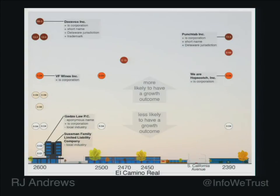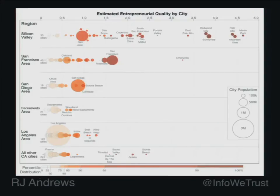We explained how the algorithm impacted real businesses on a real block in Palo Alto, saying some of these businesses have a really good chance of having a growth outcome and some don't. Once you're on board and understand that we're doing this calculation at the business registration level, we can roll these businesses up into individual cities in California. Here we have high-quality entrepreneurial cities all the way on the right and low ones on the left, separated into different regions. Silicon Valley at the top has some incredible outliers all the way in the top right of the chart.